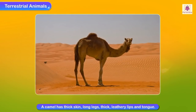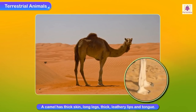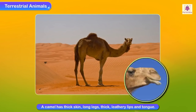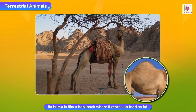The camel has thick skin, and its long legs keep the body away from the hot sand. Its thick leathery lips and tongue help it to eat thorny bushes found in the desert. Its hump is like a backpack where it stores food as fat. This fat is used by the camel when it does not get any food and water for days.